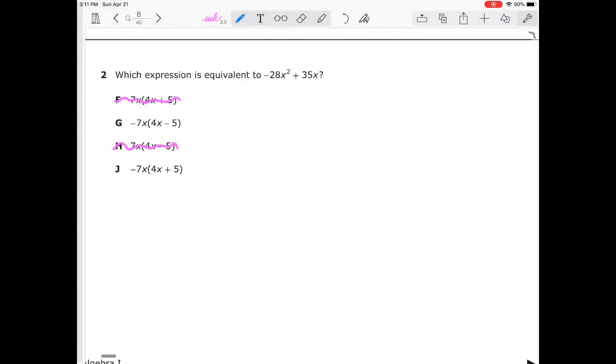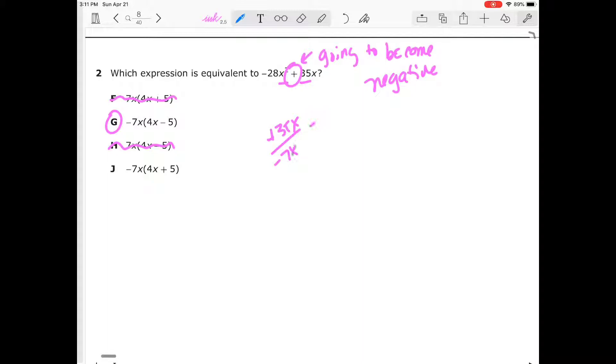If we take out a -7 from our equation, what they're doing here is making sure that you understand the relationship that if I distribute a GCF of -7, that sign there is going to become negative. The reason it becomes negative is because positive divided by negative is going to give you a negative answer. Between G and J, the only difference is that negative inside. That positive 35x divided by -7x is going to give us -5.